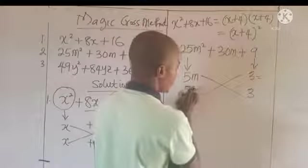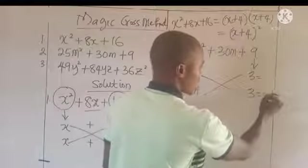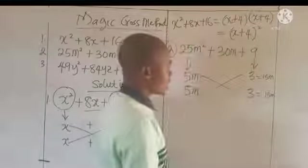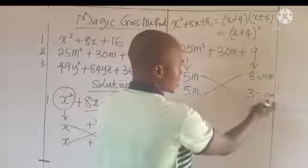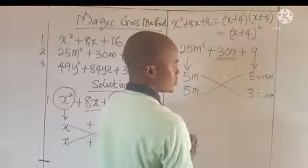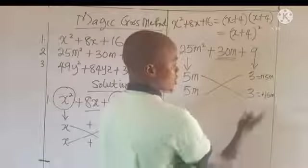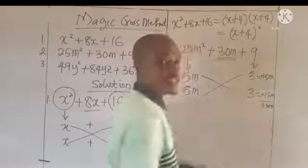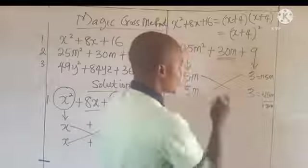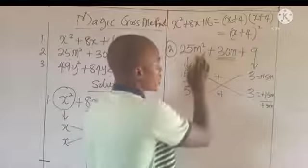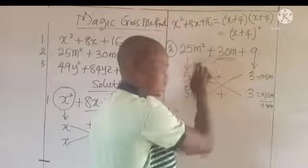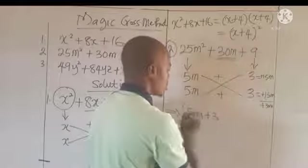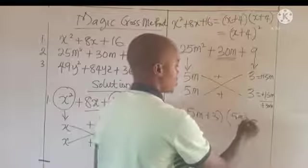If you multiply this one by this one, we get 15m. If you multiply this one by this one, we still get 15m. What can we do to these two to get the middle term? So we put plus and put plus: 15m plus 15m gives us plus 30m. For the fact that we put plus and plus, we get plus and plus in the factors. So this expression is factorized as 5m plus 3, times 5m plus 3.